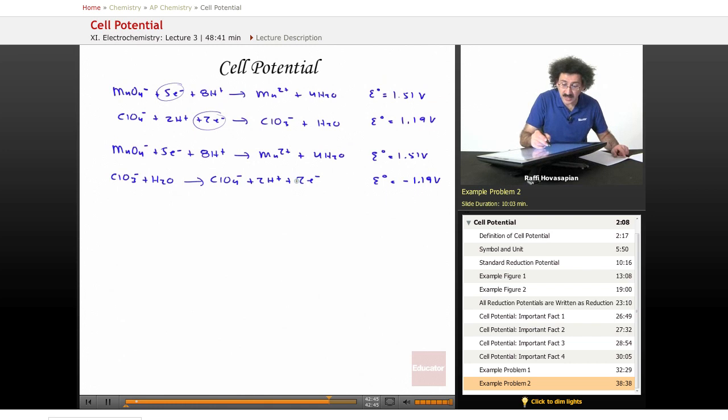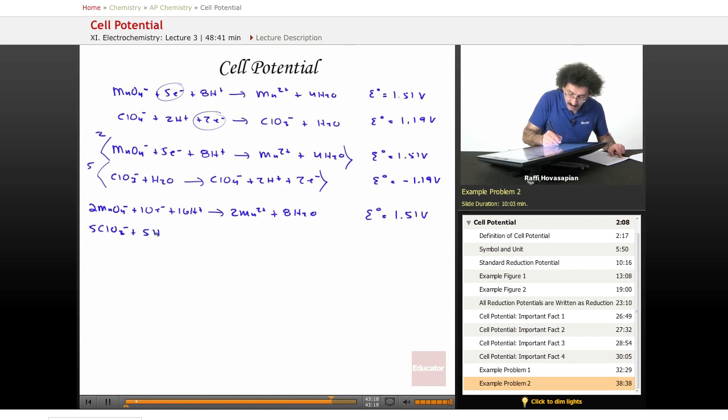Now, I need to make sure that the electrons balance. So I'm going to multiply this equation by 2 and multiply this equation by 5. So I've got 2 MnO4 minus plus 10 electrons plus 16 hydrogen ions goes to 2 Mn2 plus plus 8 H2O. And still, nothing changes as far as the reduction potential, 1.51 volts. Here I have 5 ClO3 minus plus 5 H2O goes to 5 ClO4 minus plus 10 H plus plus 10 electrons. Reduction potential minus 1.19 volts.